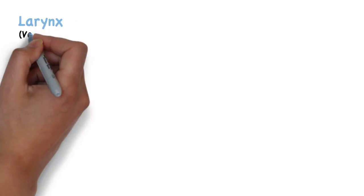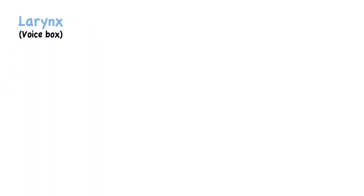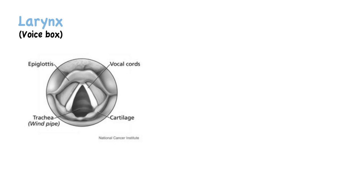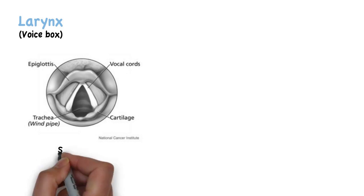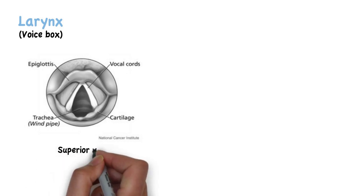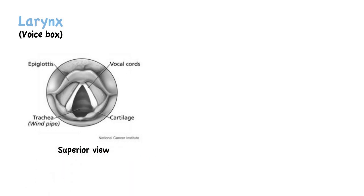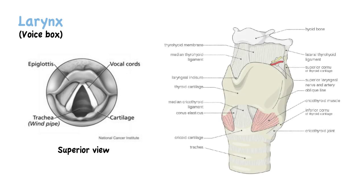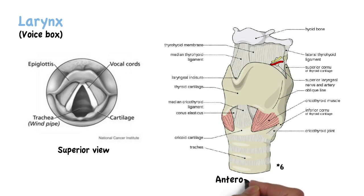The larynx is commonly called the voice box. It contains the vocal folds, which vibrate as air flows through the larynx, producing the voice. The larynx is composed of several cartilages, which are held together by several ligaments, as shown in the following image.